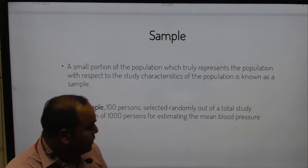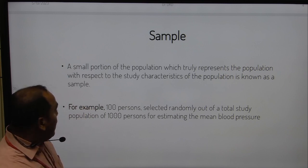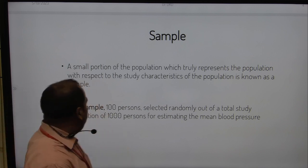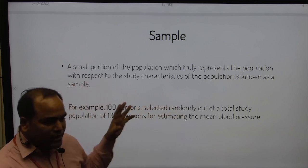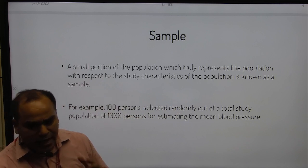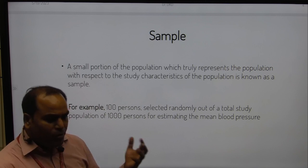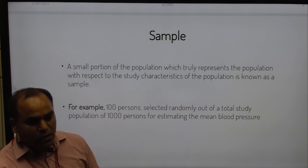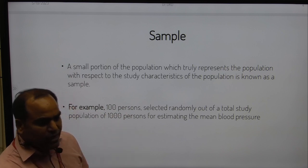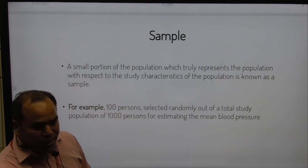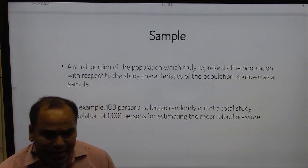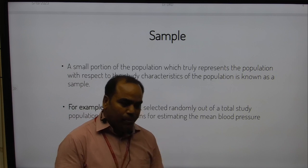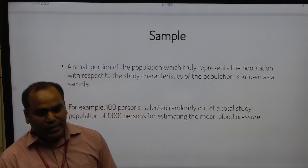So we need to understand population, sample, and different kinds of sampling mechanisms, and then probability and non-probability sampling methods. This topic is very broad and requires a large number of lectures to complete. Today's outline covers what is the target population, what is the study population, how we collect samples, and how to define population and sample. We will discuss the remaining points in the next class. Thank you everyone.